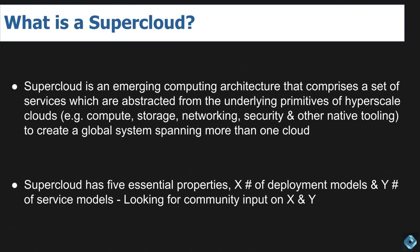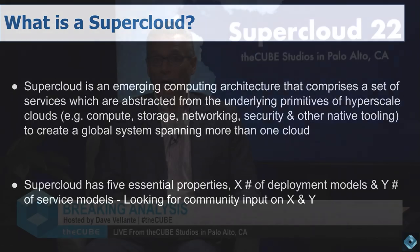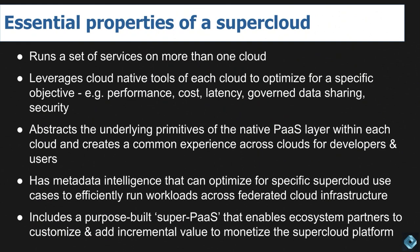Supercloud has five essential properties, with X deployment models and Y service models — we're looking for community input on both. First, a supercloud must run its services on more than one cloud, leveraging cloud-native tools from each provider. The builder is responsible for optimizing the underlying primitives — cost, performance, latency, governance, data sharing, security — while abstracting those primitives to deliver a common experience across clouds for both users and developers.